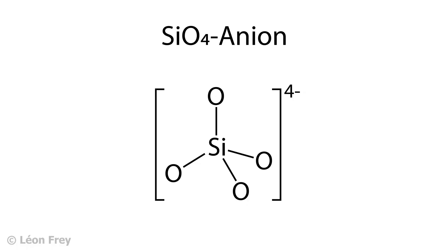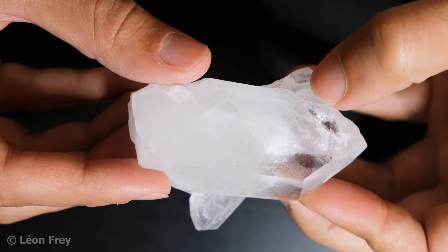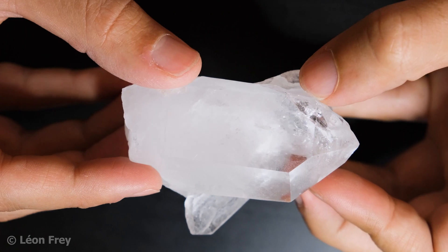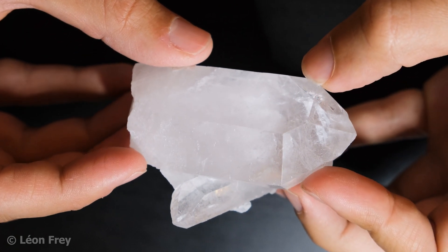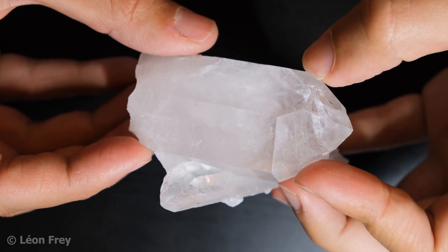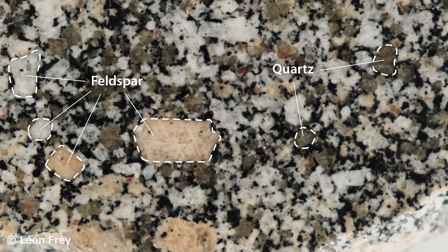Most magmas on earth are made of silicates. These are substances that contain SiO4 anions. A well-known silicate is the mineral quartz, a mineral that occurs in some magmatic rocks. Also feldspars, a mineral group that widely occurs in magmatic rocks, are silicates.